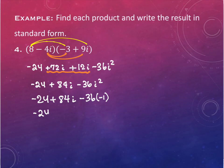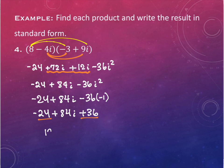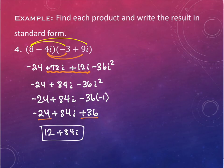So I have negative 24 plus 84i plus 36. That's still three terms because two of them still combine. Now I have my negative 24 at the beginning and my positive 36 at the end. What will these two combine to? 12. And I'm writing it with the 12 at the beginning because that's the real component, and 84i at the end — the imaginary component.